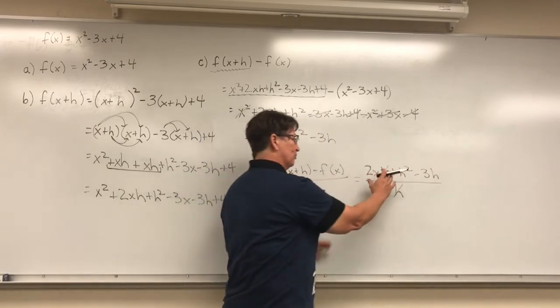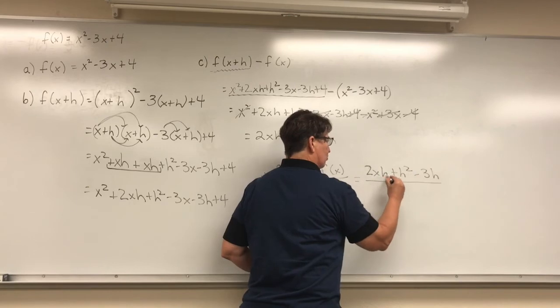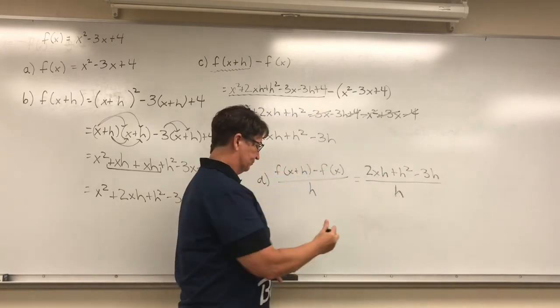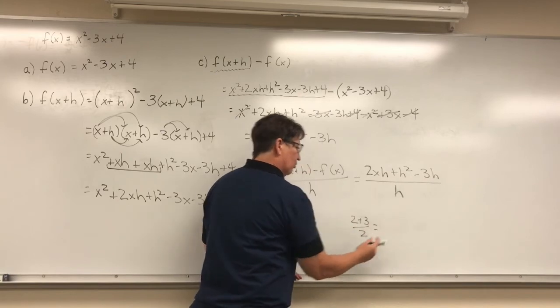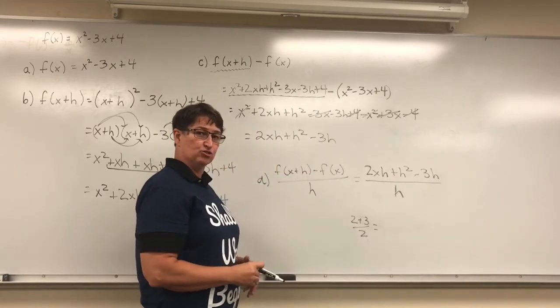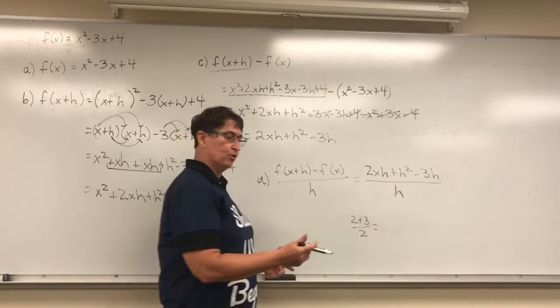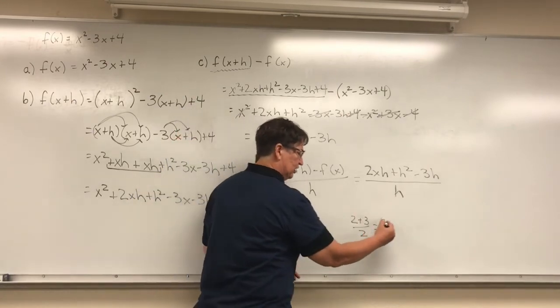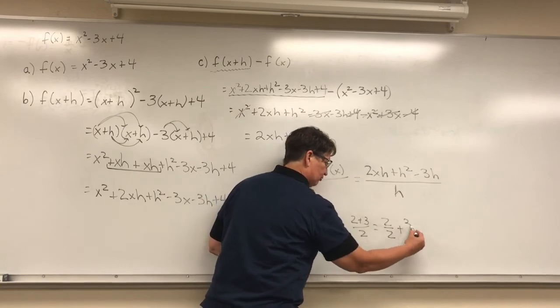So it's like we have a grouping symbol up on top. But we can do this. Back to my 2 plus 3 over 2. Remember that when we add fractions, we find a common denominator and then we add the numerator. Well, look at this. Couldn't I rewrite that as 2 over 2 plus 3 over 2?